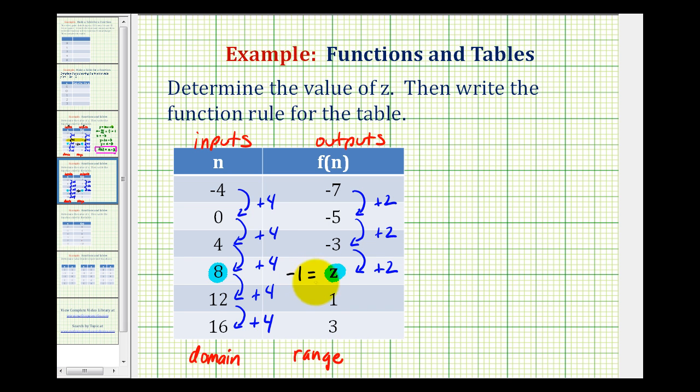And if z is equal to negative one, notice that if we add two, we would get the next output and the pattern continues. One plus two is equal to three. So we can conclude that z would be equal to negative one.